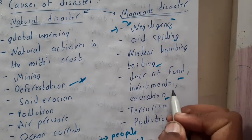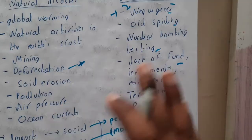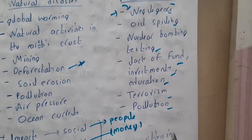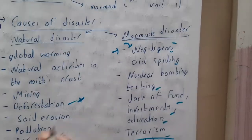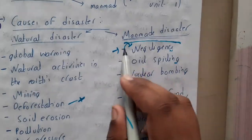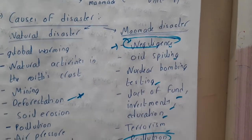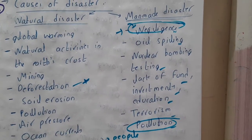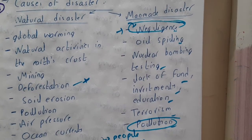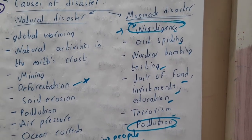Similarly, oil spills, nuclear bomb testings, lack of education, lack of funds or investment, terrorism, and pollution are man-made causes of disaster. Basically, pollution and negligence are the most important ones to remember, along with terrorism. These are the common causes of disaster.